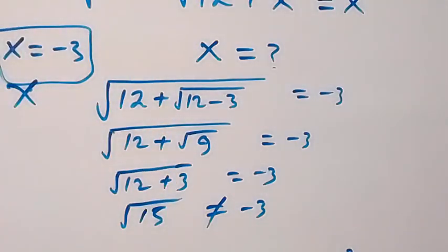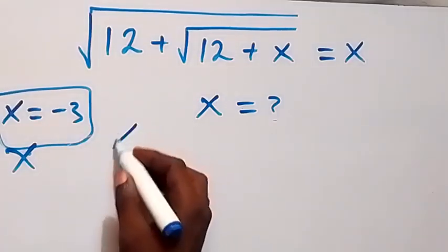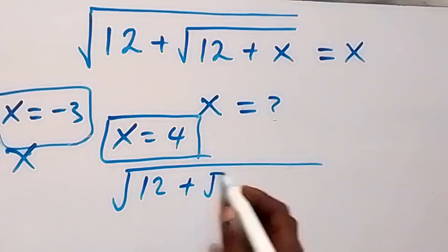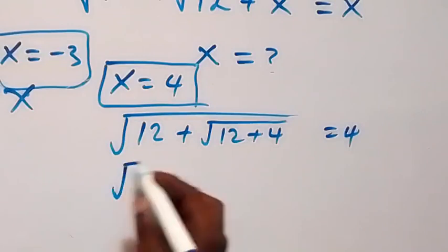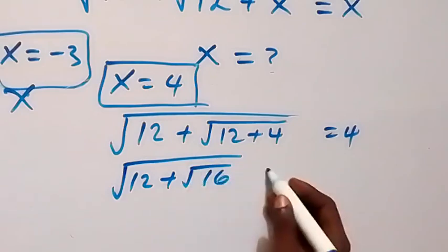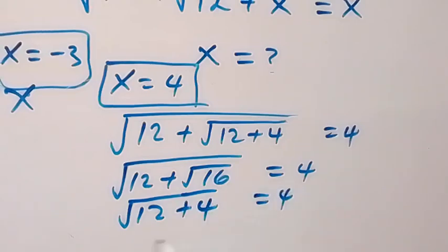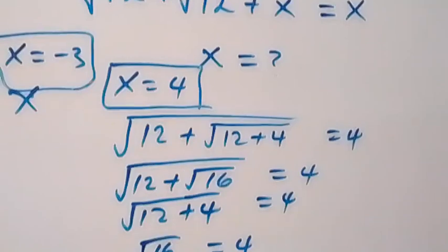When we check x equals to 4, substituting: square root of 12 plus square root of 12 plus 4 equals 4. That is square root of 12 plus square root of 16 equals 4. Root 16 is 4, so we have square root of 12 plus 4 equals 4, which is square root of 16 equals 4, and root 16 is indeed 4. So x equals to 4 satisfies the given problem. So thank you for watching, don't forget to subscribe to my channel, turn on the notification bell, share this video, give it a thumbs up, and see you in the next class.